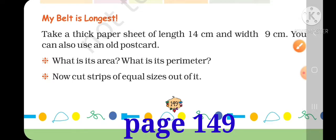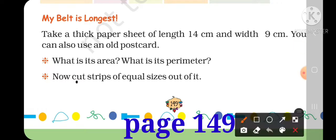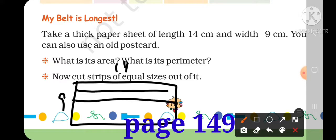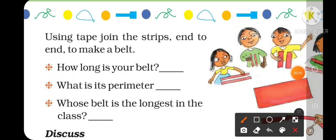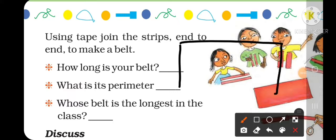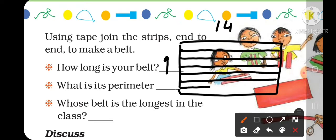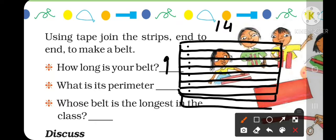Now cut strips of equal sizes out of it. I have a postcard and I have cut strips. The length is 14 and width is 9. I cut strips of 1 cm width. So how many strips will there be? I have a total of 9 strips. Count these: 1, 2, 3, 4, 5, 6, 7, 8, 9. Okay, these are 9 strips.